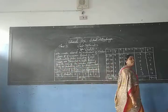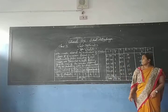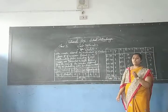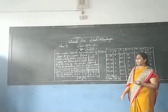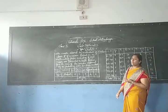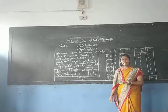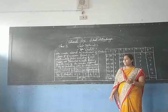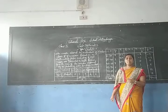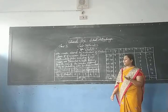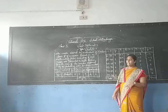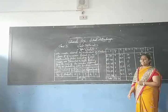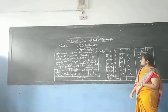In the previous session, we learned how to find the mean using the direct method, where columns used were class interval, class mark (xi), and fi×xi. Now let us proceed to the step deviation method. In the step deviation method, we use the following columns.